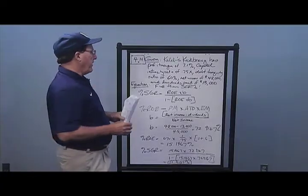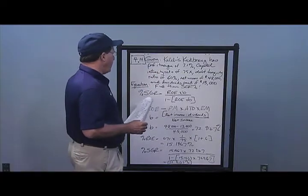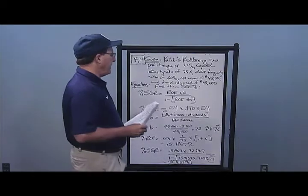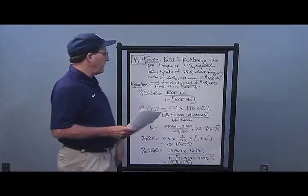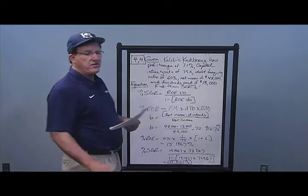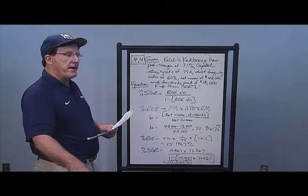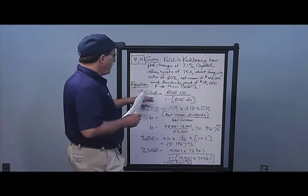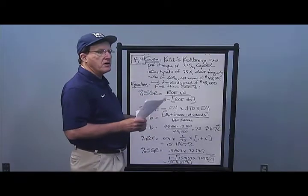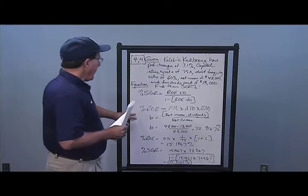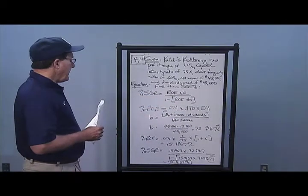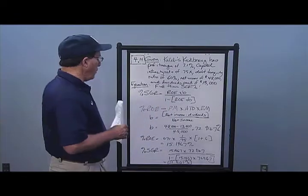For problem number 14, we have Caleb's Kickboxing with a profit margin of 7.1%, capital intensity ratio of 0.75, debt-to-equity of 60%, net income of 48,000, and dividends paid of 13,000 — retaining 35,000 in additions to retained earnings. Find the sustainable growth rate: the rate at which sales can grow without any new equity financing while maintaining the debt-to-equity ratio. SGR equals ROE times b divided by one minus ROE times b. b equals net income minus dividends divided by net income: 35,000 over 48,000, or 0.729167.